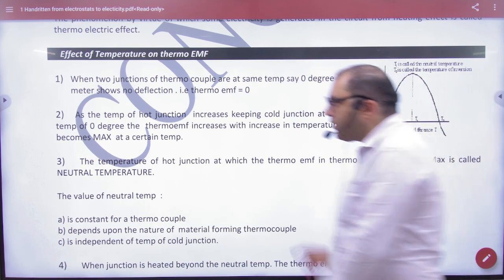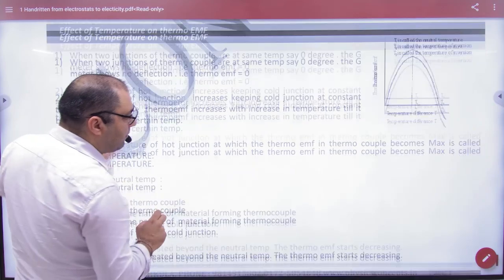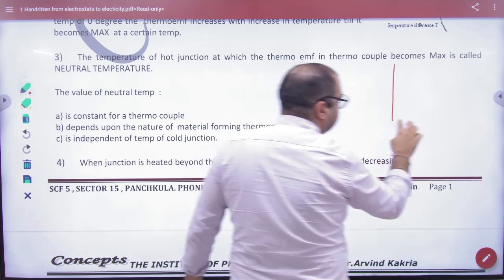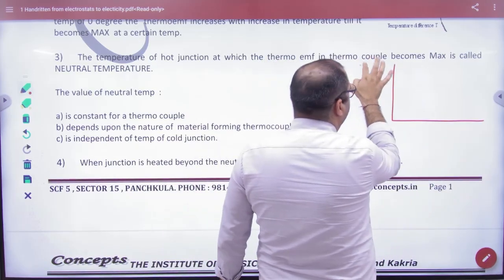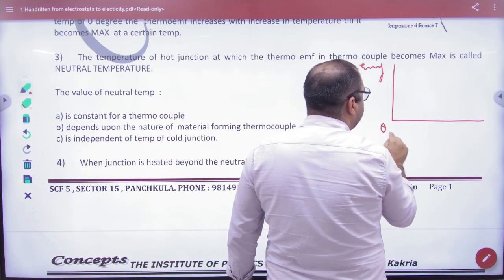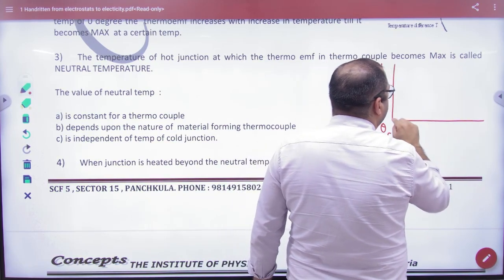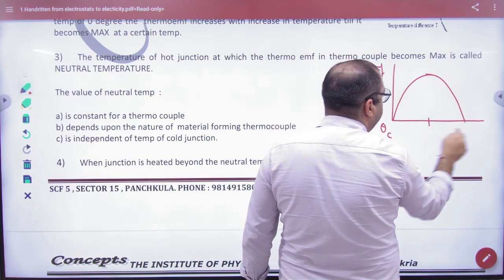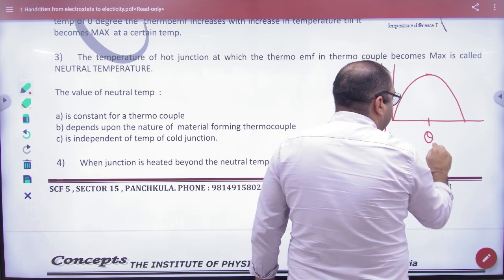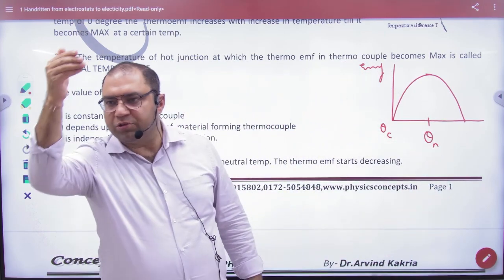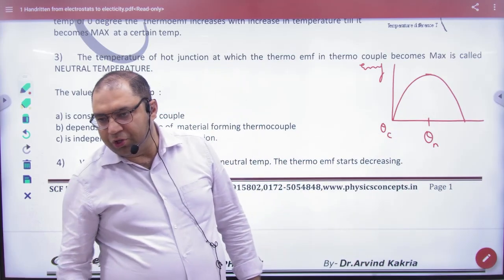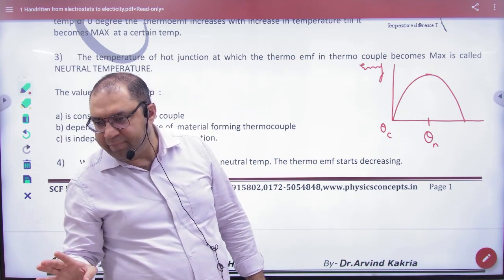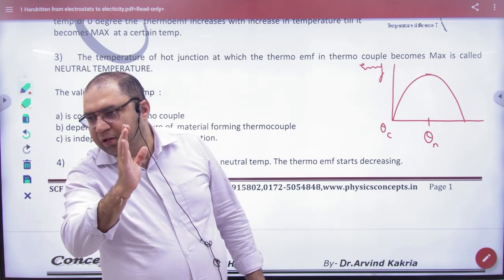The third point which you have to remember is this. You can make it in your booklet - when this graph is made, this is the temperature of cold junction and the graph will become like this. Thermo-EMF is maximum here, so the temperature when thermo-EMF is maximum is called neutral temperature. Neutral temperature is the temperature of hot junction because cold is fixed and hot is increased when EMF is max.